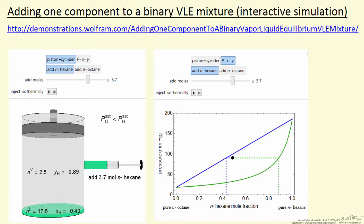On the left is shown a snapshot from the simulation where liquid is present. This is the number of moles of liquid, and the mole fraction is 0.43 for hexane. The vapor is enriched in hexane, and this is the number of moles of vapor.